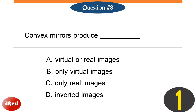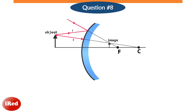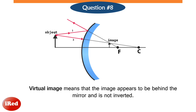Number eight: the correct answer is letter B — only virtual images. Regardless of the object's position, a convex mirror always forms a virtual image. This means that the image appears to be behind the mirror and is not inverted.